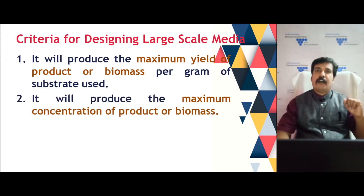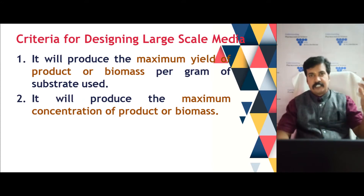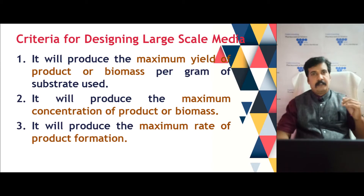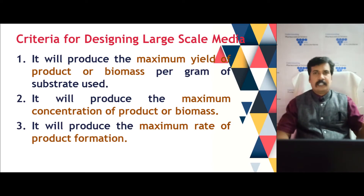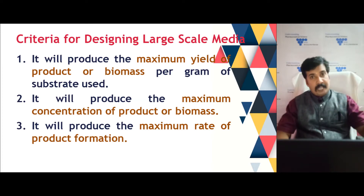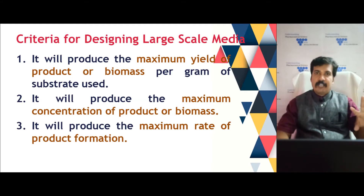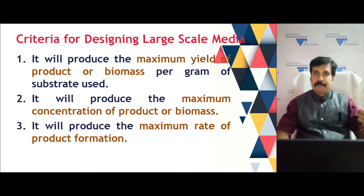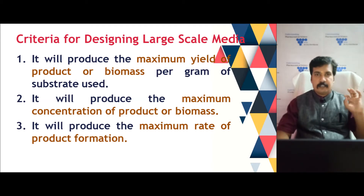The second criterion is that we also need maximum concentration of the product or biomass. The third criterion is the rate — if we get maximum yield only after 10 days, it is a business loss. We need maximum yield in a short duration, so the media should be designed to have a maximum rate of product formation. We need maximum yield, maximum concentration, and that to happen at a faster rate — these are the first three criteria.